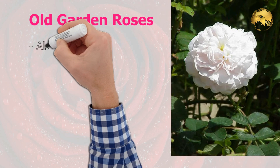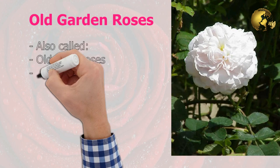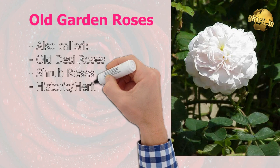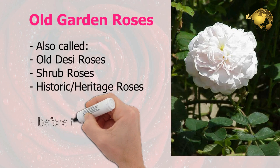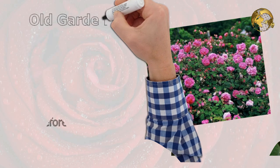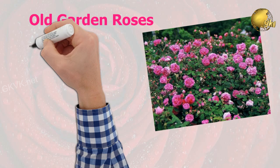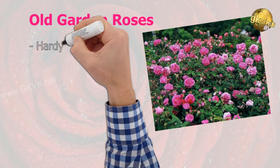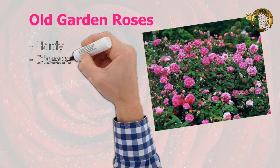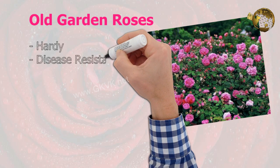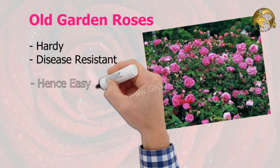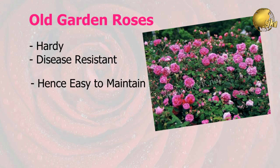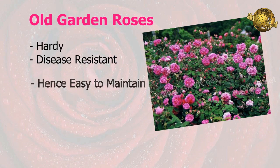Old Garden Roses are also called Heritage Roses or Historic Roses. They are species that were popular before the 20th century. Most of these are characterized by their hardiness — that is, the ability to withstand a cold winter — and they are also disease resistant. These roses are grown to beautify gardens because they are easy to maintain and hardy compared to English Roses or Modern Roses.